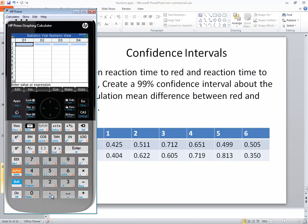So we'll put 0.425, enter. 0.511, enter. 0.712, enter. 0.651, enter. 0.499, enter. And 0.505, enter. Let me double check those numbers. That's good.